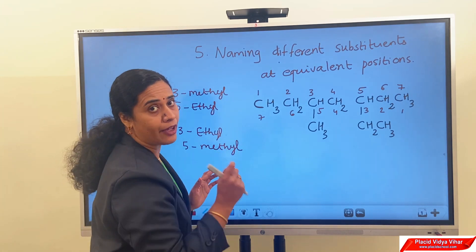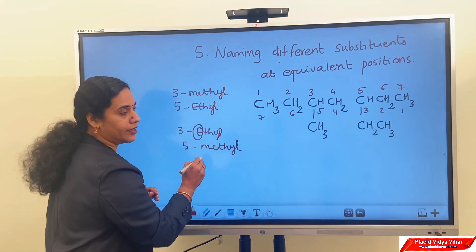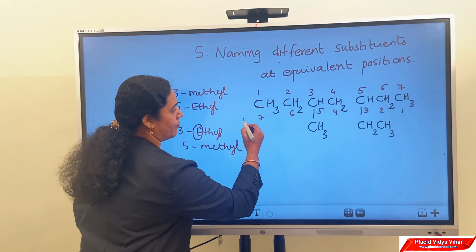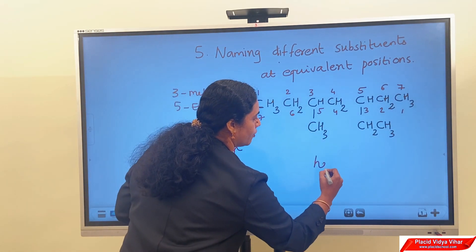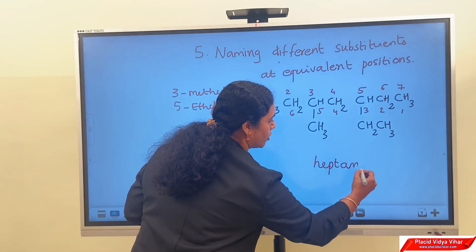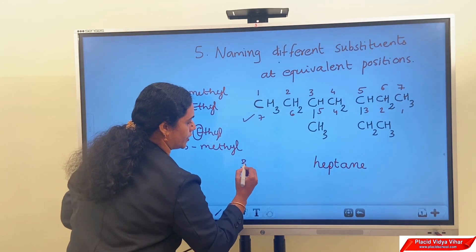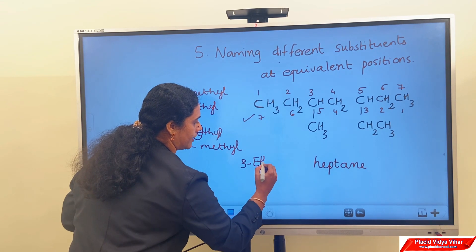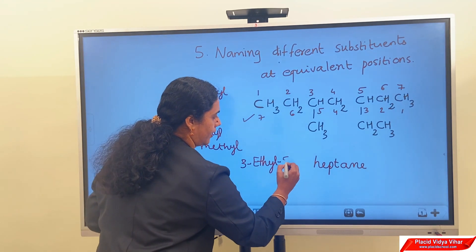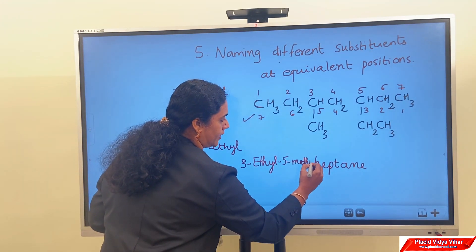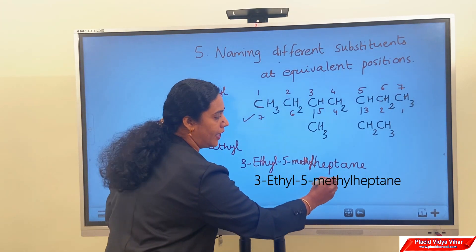In this case, we have to consider the alphabetic order. E comes before M. Therefore, the correct way of numbering is right to left. This compound consists of seven carbon atoms, so the word root is hept, saturated compound, -ane. The ethyl group is at the third position and methyl group at the fifth position. So the name of the compound is 3-ethyl-5-methylheptane.